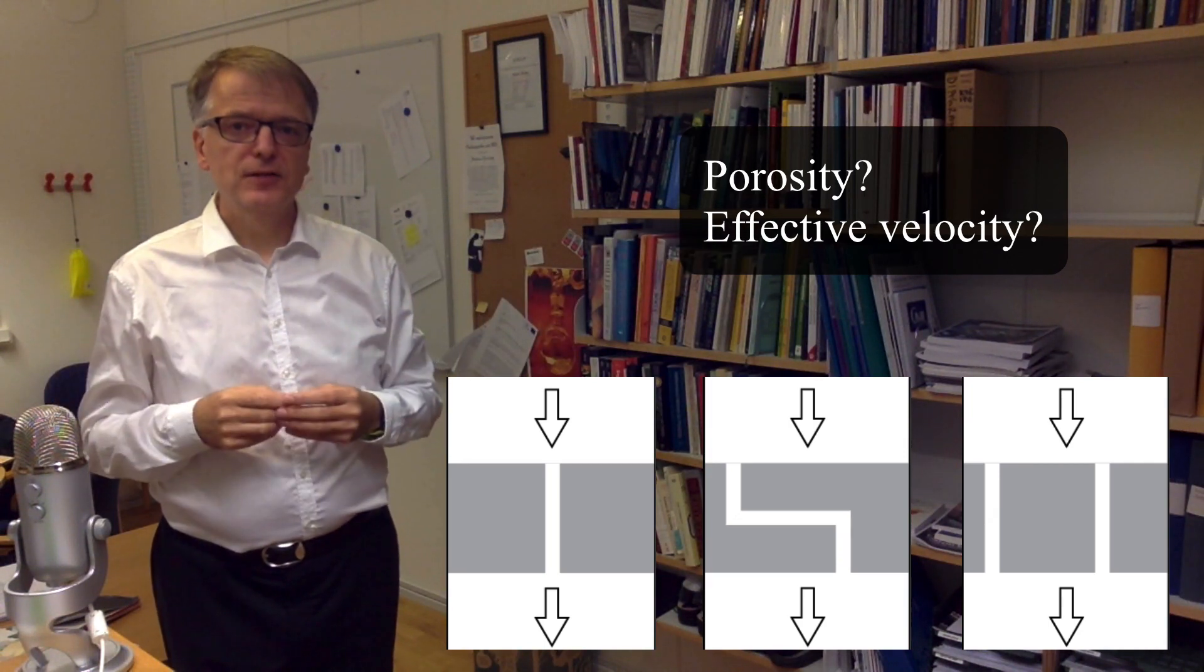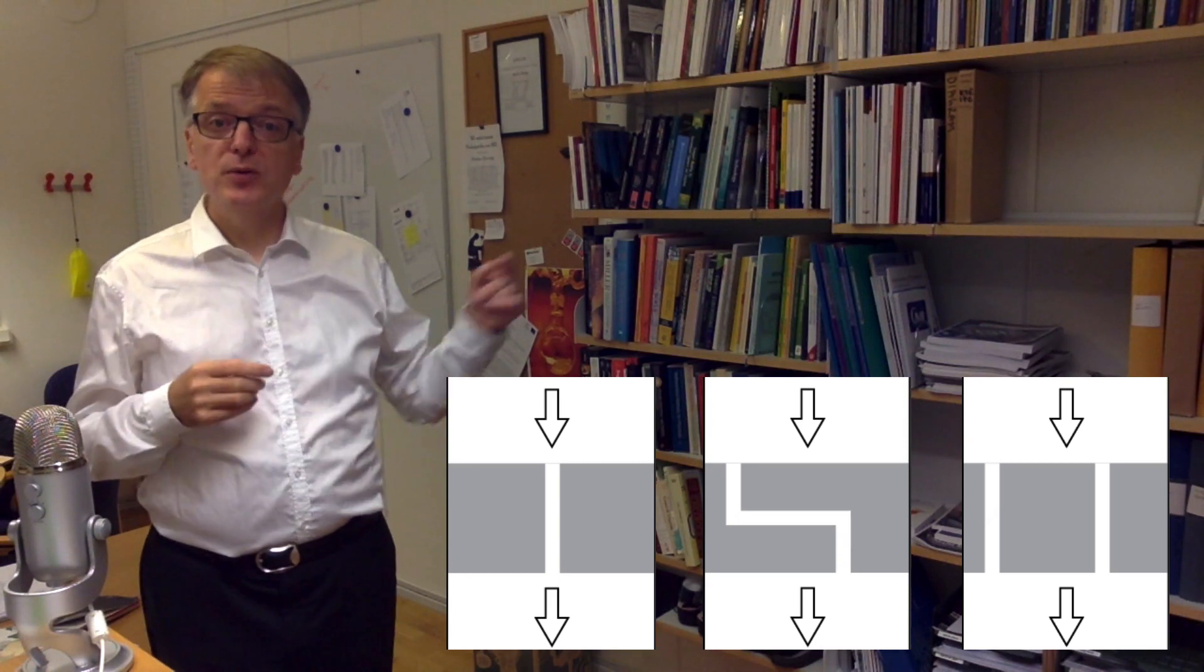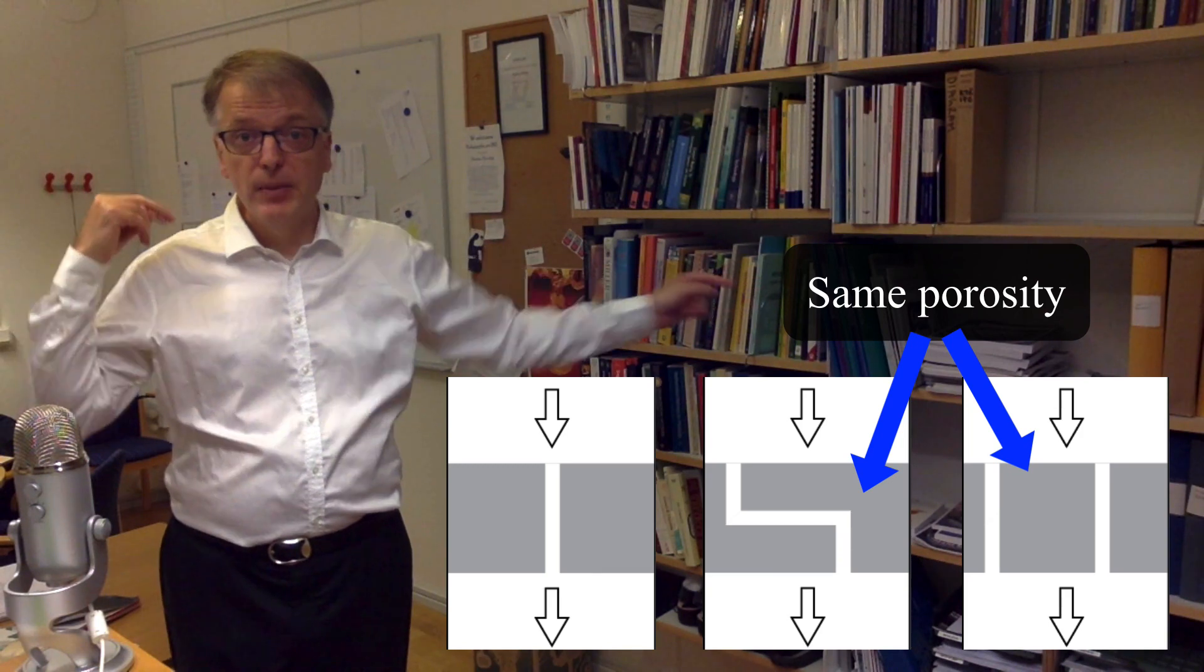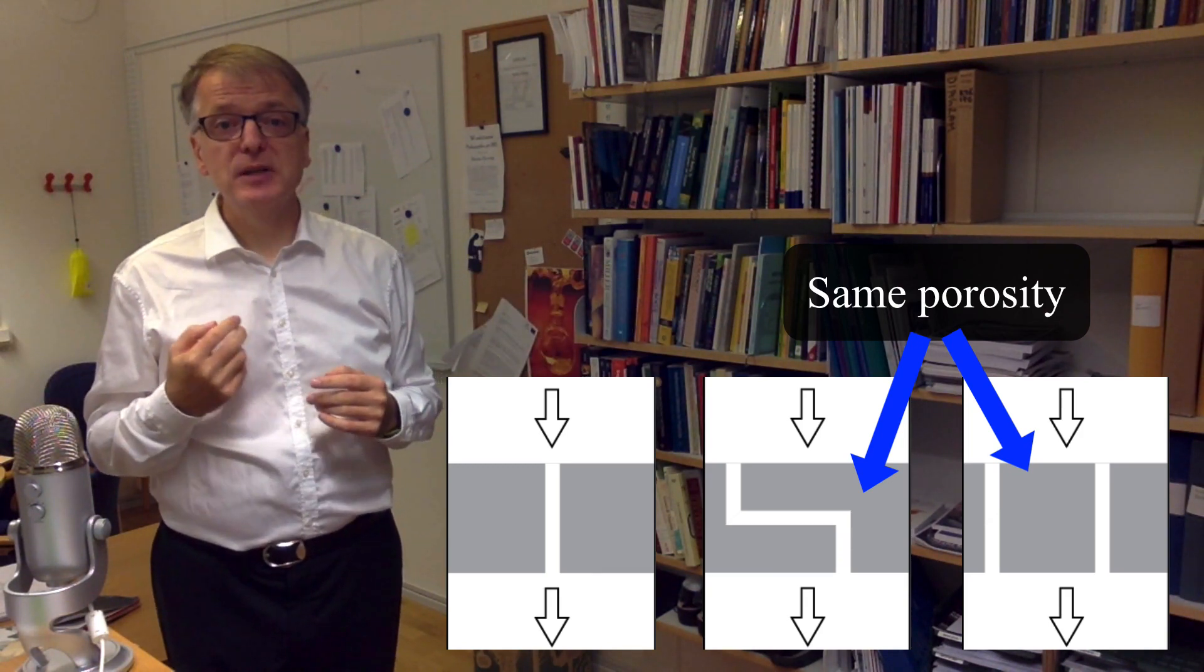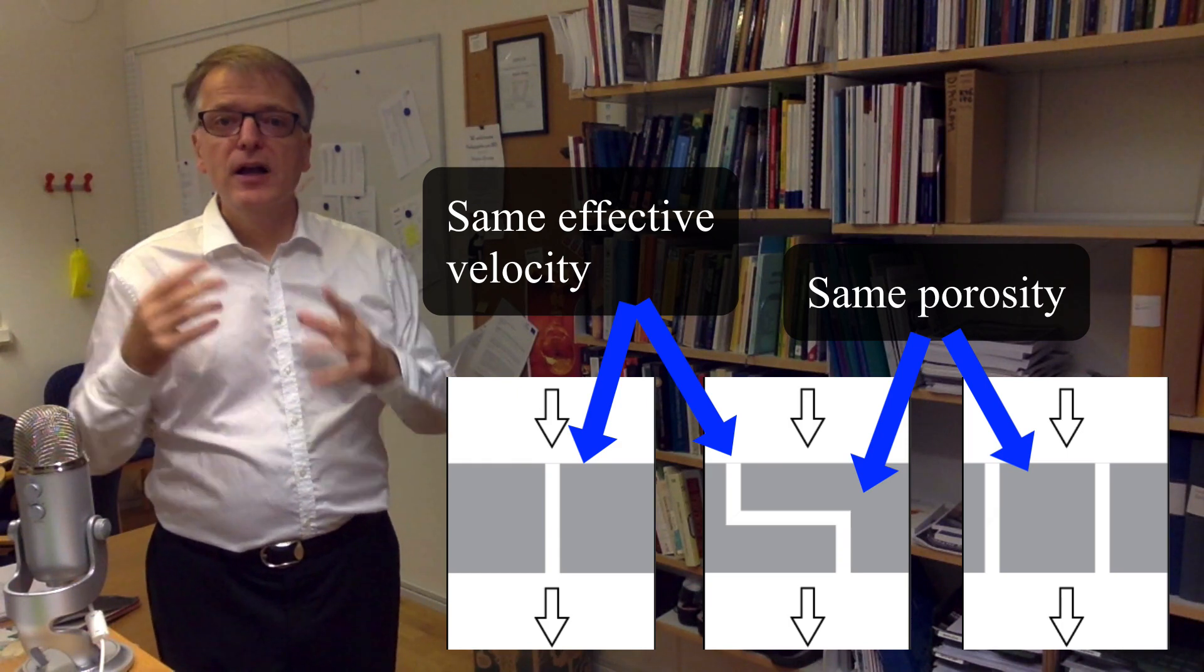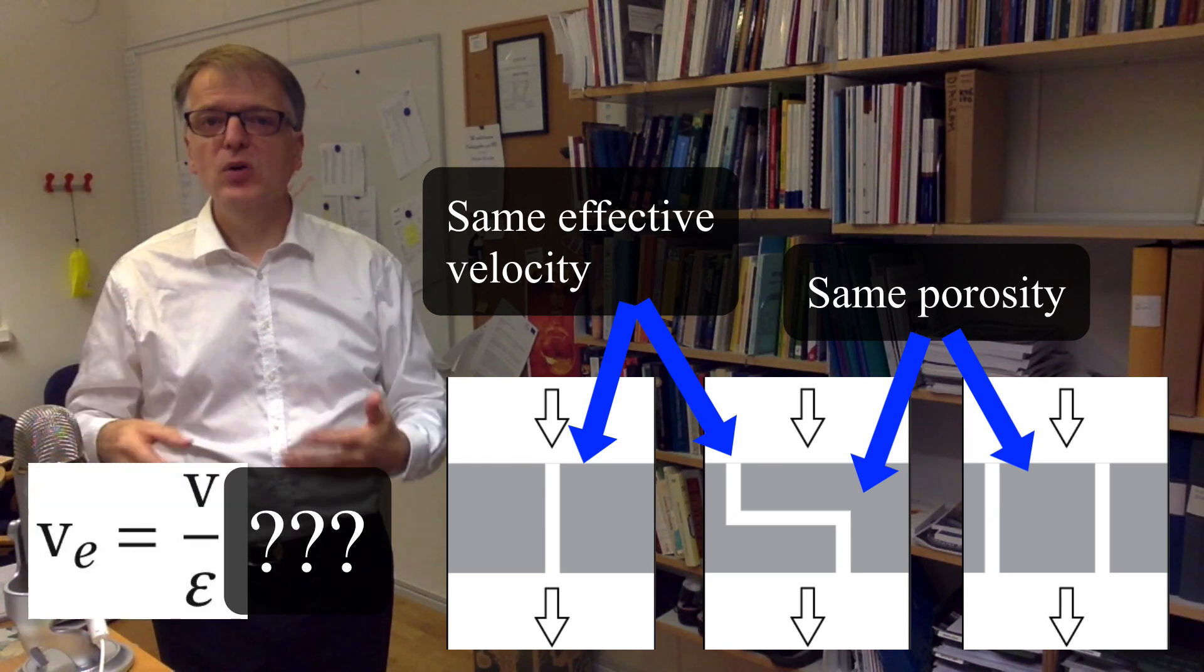If you think of this carefully, clearly the porosity for our new material must be the same as for the porous media with two channels. But the effective velocity must be the same as for the porous media with only one channel. Thus, there is clearly something wrong with our equation.